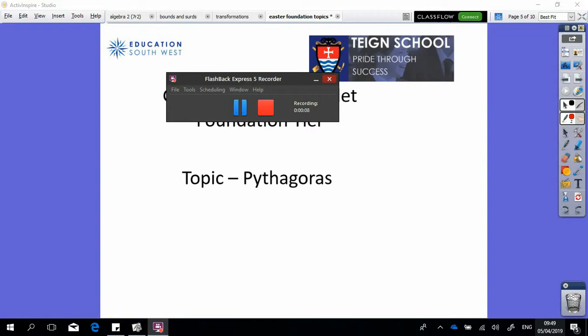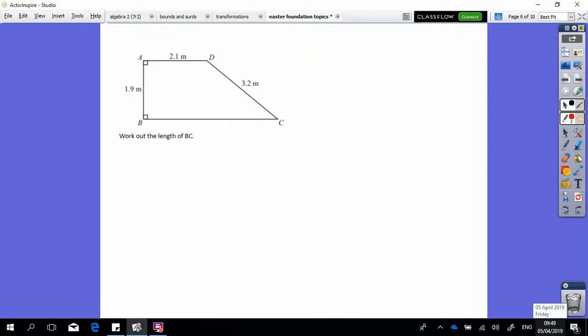Looking at this shape here, it's not exactly obvious straight away that we are going to be using Pythagoras, because Pythagoras is to do with right angle triangles. At the moment we have a trapezium.